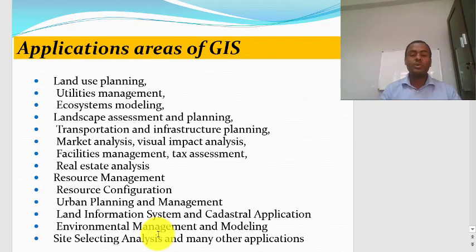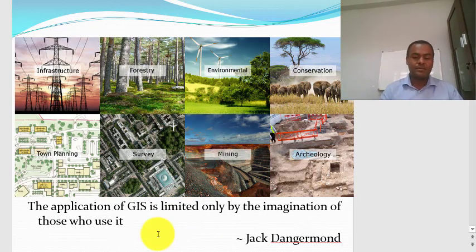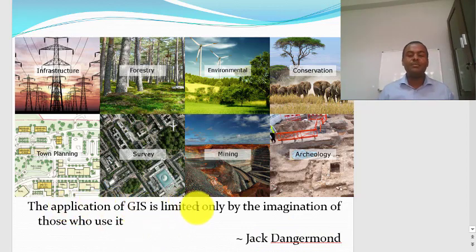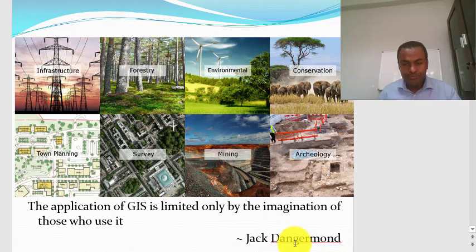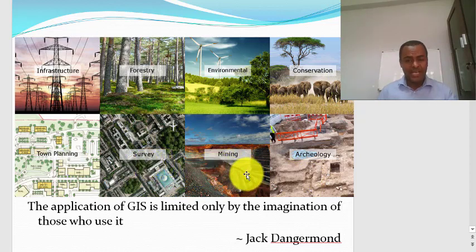What are the application areas of GIS? You can use GIS for land use planning, utility management, ecosystem modeling, and landscape assessment. This is a short list from a much longer list of GIS applications. As Jack D'Angerman, the president of ISRI, once said, the application of GIS is limited only by the imagination of those who use it. Major application areas include infrastructure, forestry, environmental applications, conservation, mining, surveying, town planning, and disaster risk management.